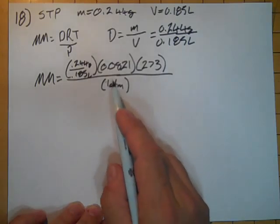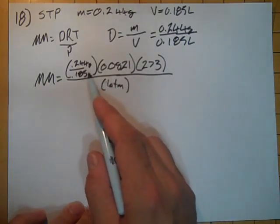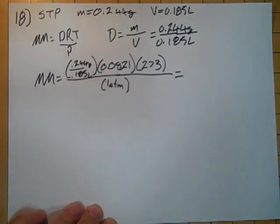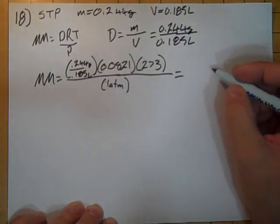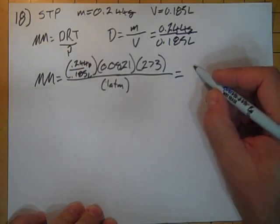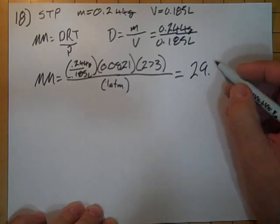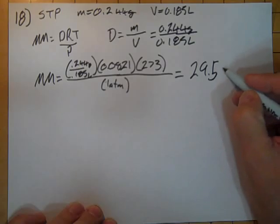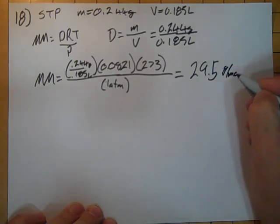Given the choice, I chose atmospheres. Well, it wasn't really a choice, but I picked it because it makes the math that much easier. So when I solve this, I find that the molar mass that I determined experimentally is 29.5 grams per mole.